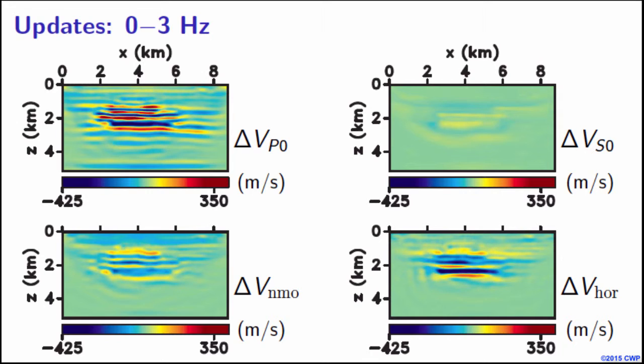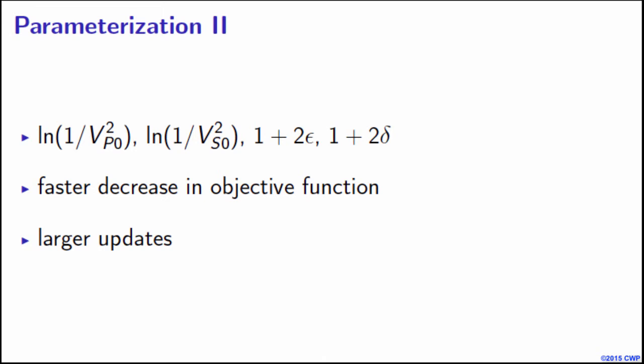So that's the other parameterization that we are working on. It's log of the vertical velocities squared and scaled epsilon and delta. This is based on the parameterization that was introduced by Shen in 2012 in the EAG abstract. The reason this seems interesting is because first we see a much faster decrease in the objective function. It's much steeper, and we see much larger updates as a result, especially in Vp0. And that also can be explained in terms of radiation patterns. But this is one parameterization we would like to try. And if you have time, I'm sure we will try some other parameterizations as well.